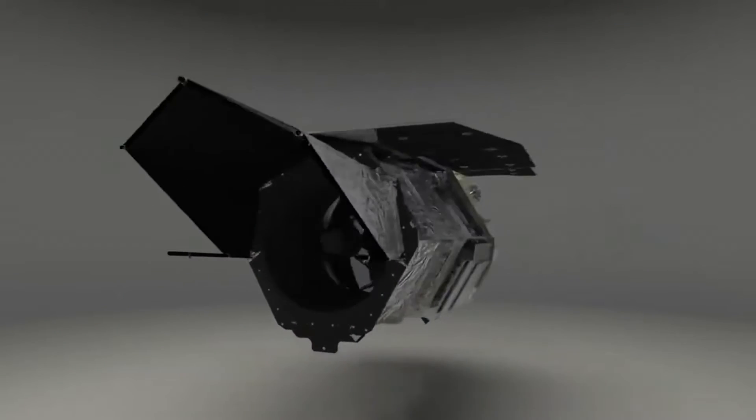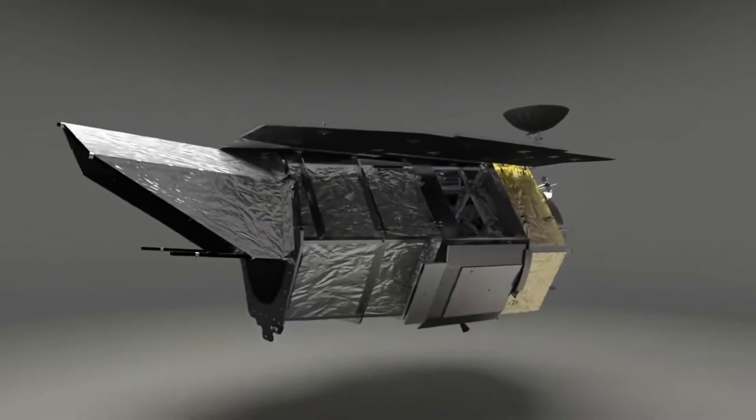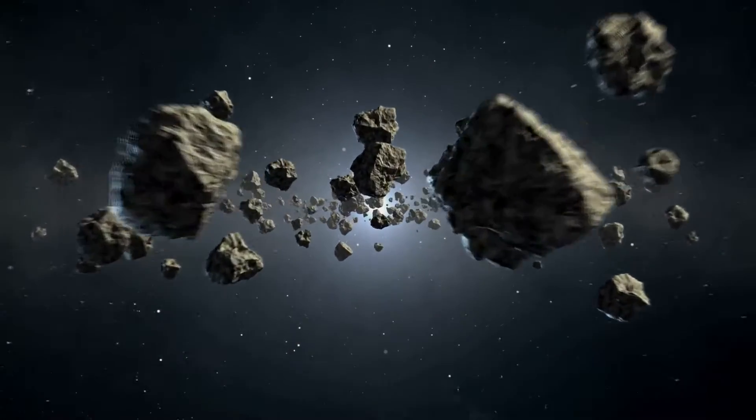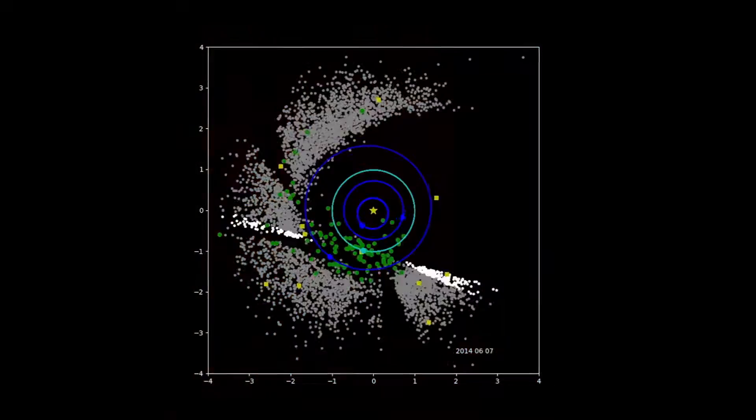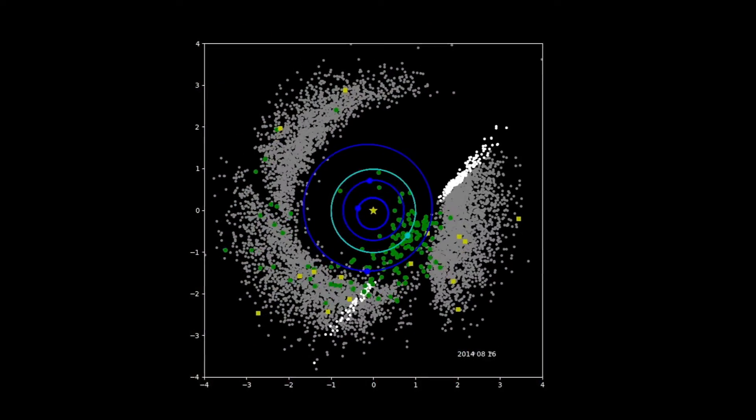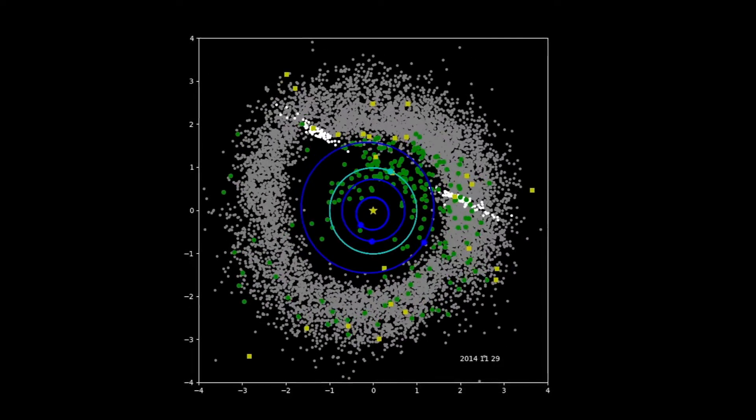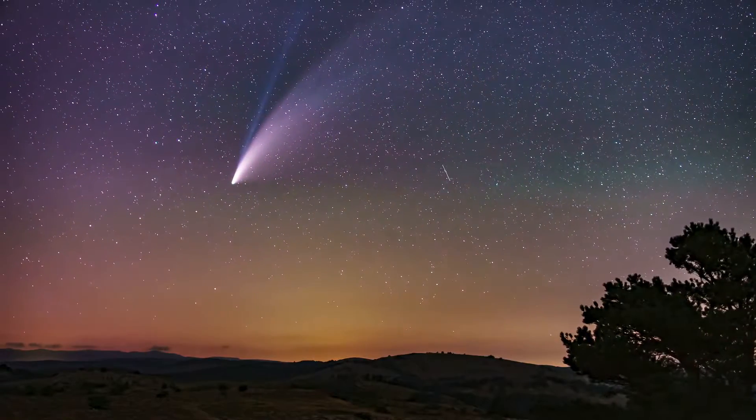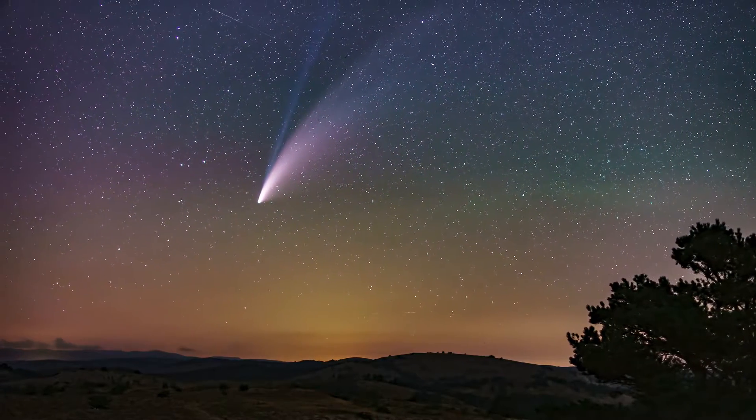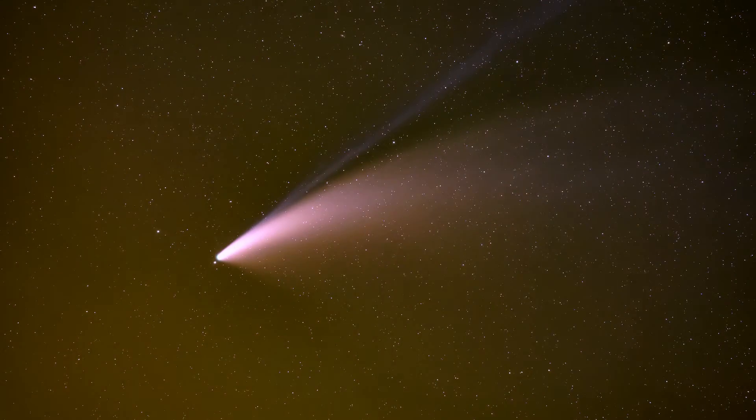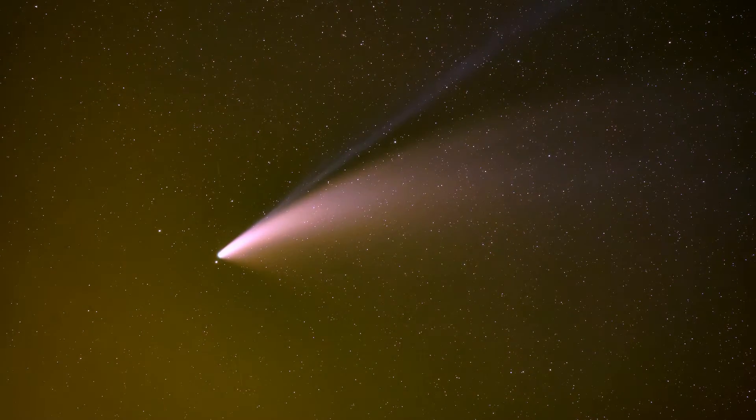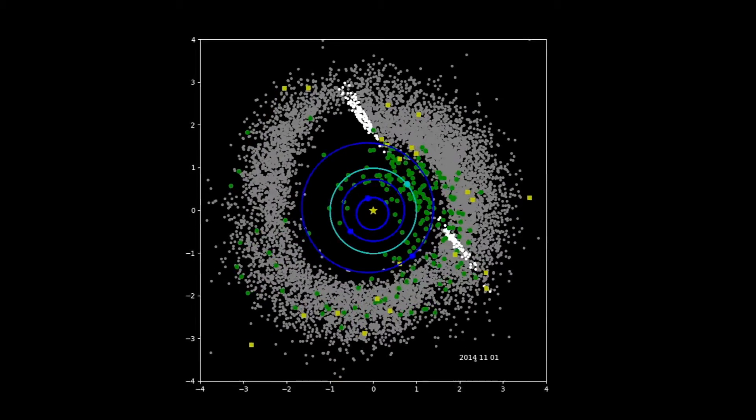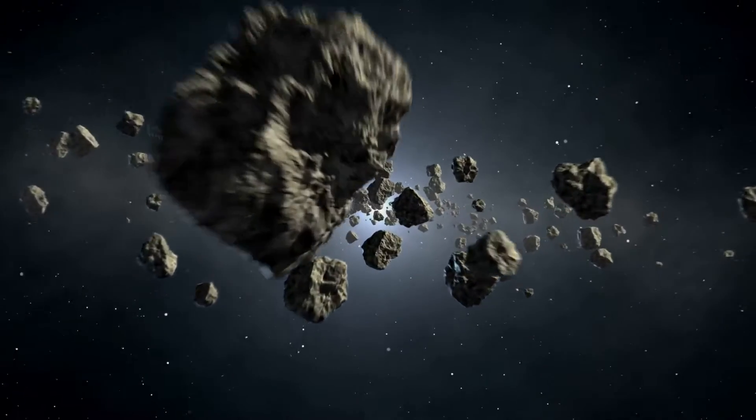NEOWISE's infrared observations have also been crucial for studying comets. Comets are often shrouded in gas and dust, which can obscure their cores in visible light. Infrared observations penetrate these veils, revealing the comet's nucleus and providing insights into its composition and structure. This was the case with Comet NEOWISE, which became a dazzling sight in the night sky in 2020. NEOWISE's data allowed astronomers to study the comet in detail, contributing to our understanding of these enigmatic objects.